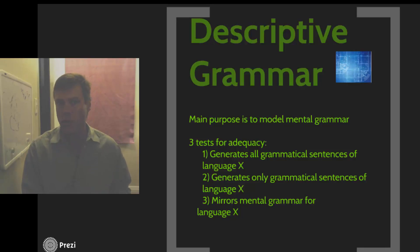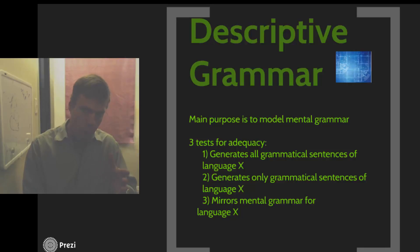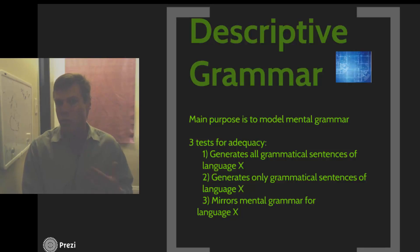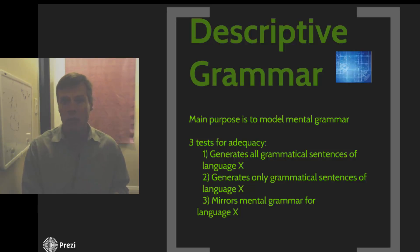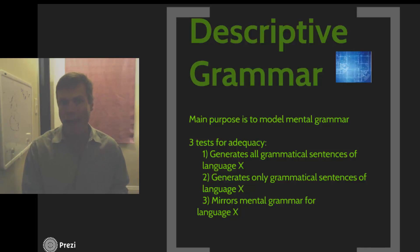We don't want it to generate sentences that a native speaker would say are not a part of our language — sentences or words that native speakers just wouldn't use. But we also want to be able to generate all of the grammatical sentences of a language, and that includes swearing. Now, historically, since the advent of linguistics, linguists have largely ignored taboo words and swearing.